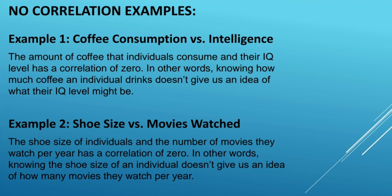Next, no correlation examples. Example 1: coffee consumption versus intelligence. The amount of coffee an individual consumes and their IQ level has a correlation of zero — knowing how much coffee an individual drinks does not give us an idea of what their IQ level might be. Example 2: shoe size versus movies watched. The shoe size of an individual and the number of movies they watch in a year has a correlation of zero — knowing the shoe size of an individual does not tell us how many movies they watched.